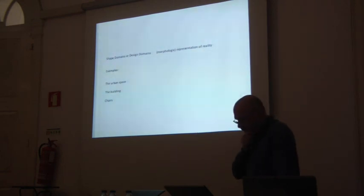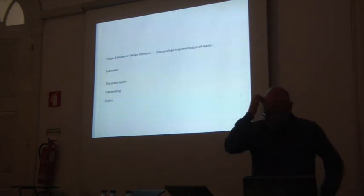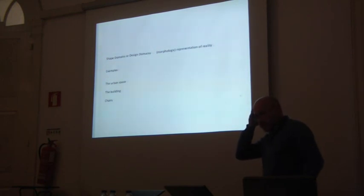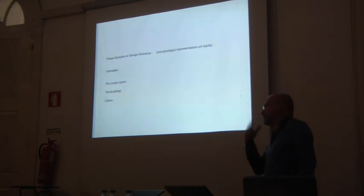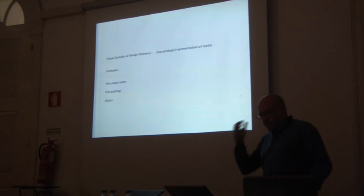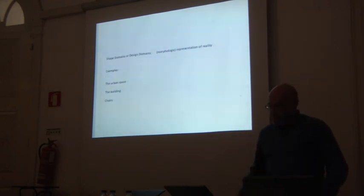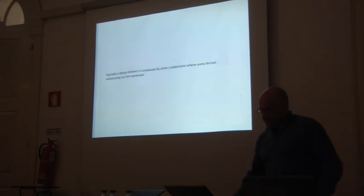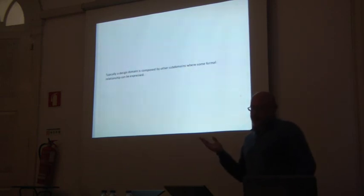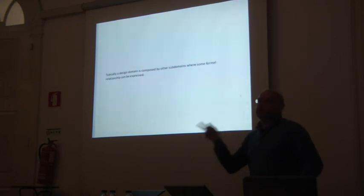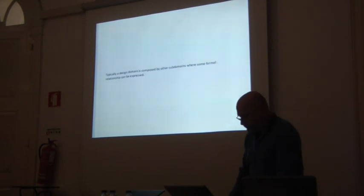But first you need to have the language. The first thing you need to do when developing such a system is to understand the shapes you make — the design you make where you're working. If the example is housing, you need to understand what kinds of shapes you use when working with houses. If you want to develop urban designs, you need to understand first the shapes you deal with in urban design. Typically, a design domain is composed of other subdomains where some formal relationship can be established between those subdomains.